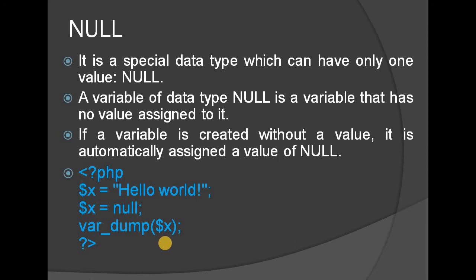Next is null. Null and resource are special types. A variable of data type null is a variable that has no value assigned to it. Every variable declared without a value is automatically assigned the null value in PHP. If a variable is created without a value, it is automatically assigned null.